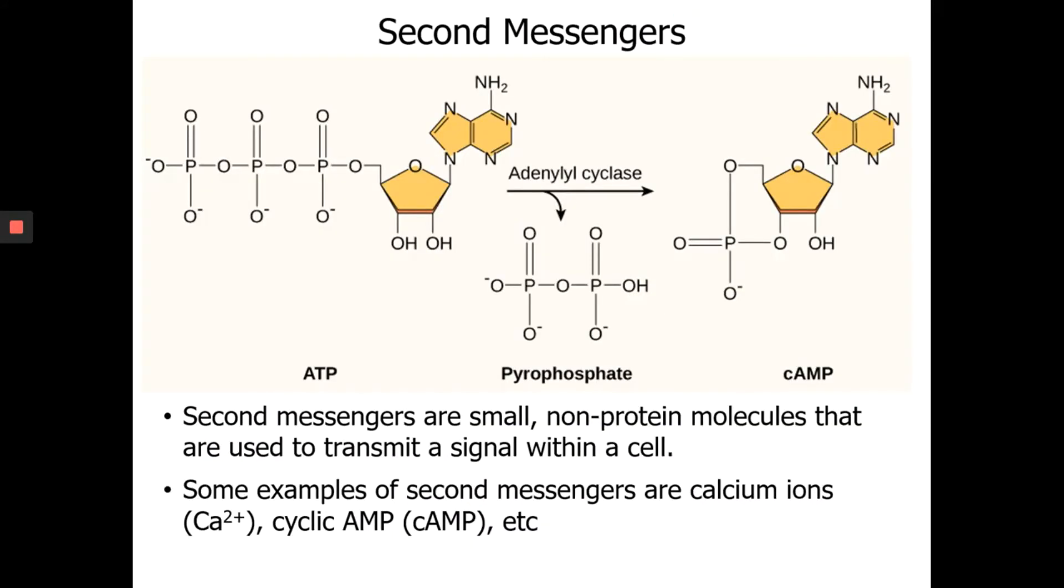Now, second messengers. They're called second messengers because they're not the initial ligands. Usually the binding of ligands and cell surface receptors will trigger a series of responses. During that process, it may activate a second messenger. That's why we call them second messengers. They're not the initial messenger.